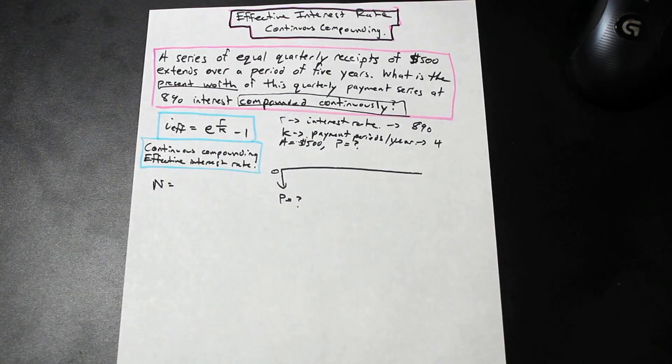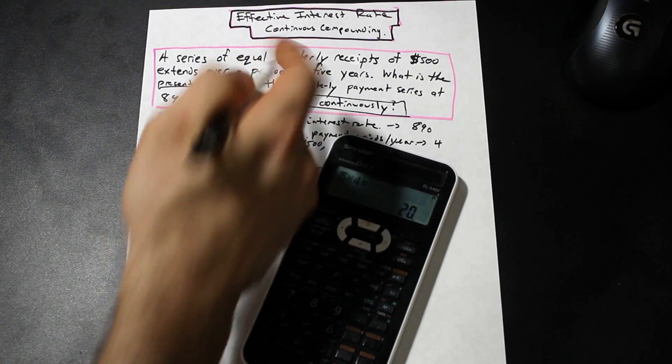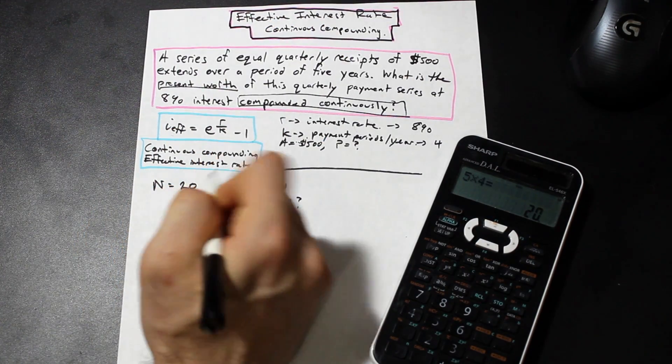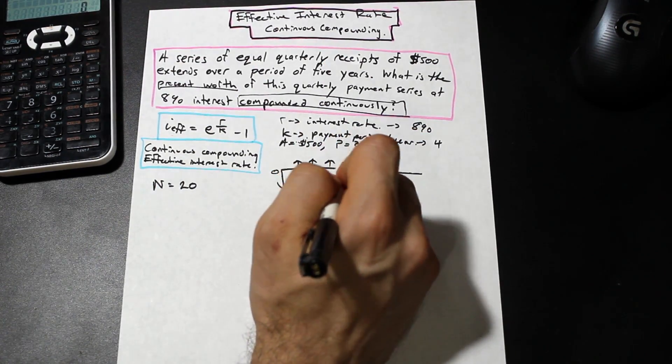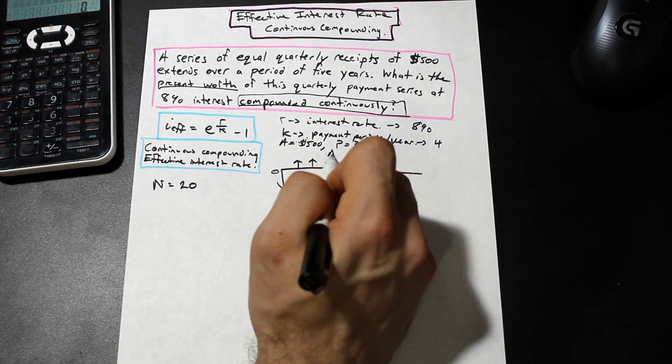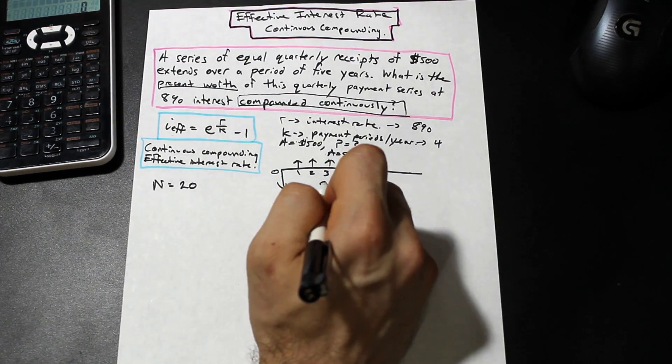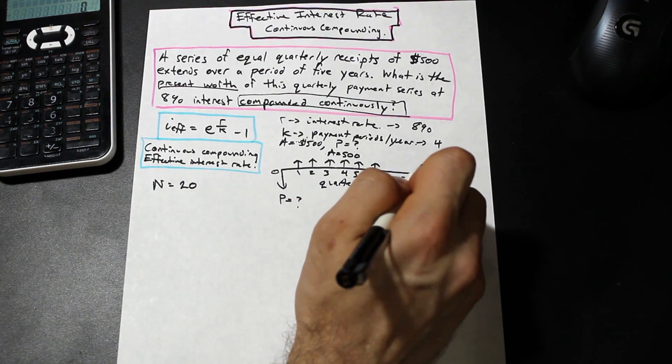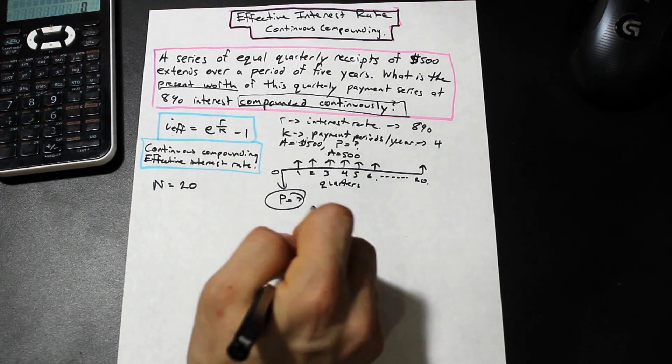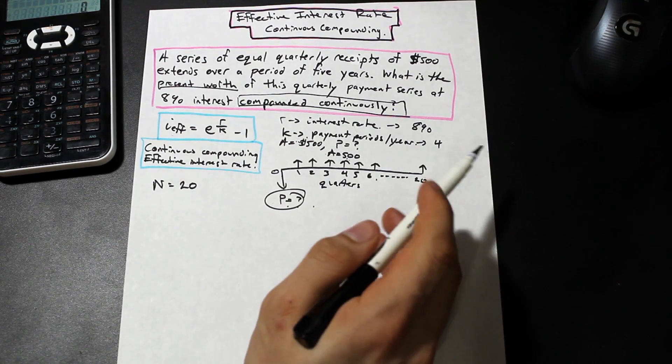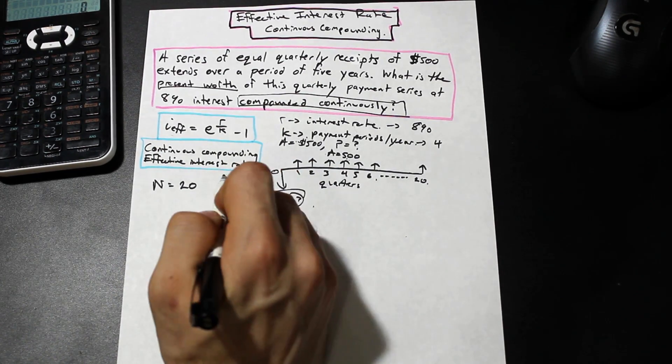So we do need to find our n value. Our n value is simply the number of payments times the number of years. So we have five times the number of payments per year, so that's going to be 20 because we have 20 quarters within five years. So it's going to look like this - these are all A equals $500, and we're going to have two, three, four, five, six, where this is the number of quarters, all the way to 20. We are looking to find P, and we are given the value of the annuity. So the formula that we're going to use is P given A.